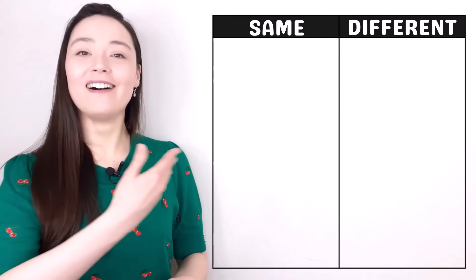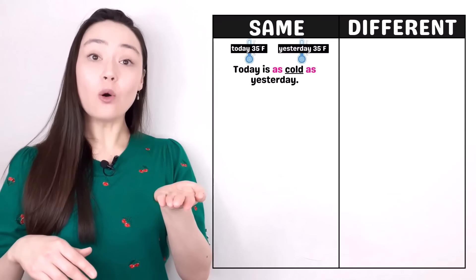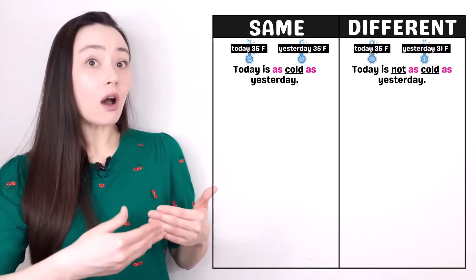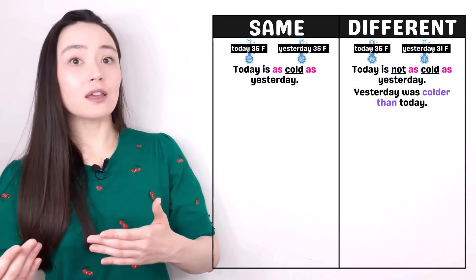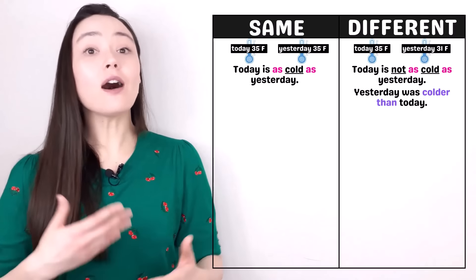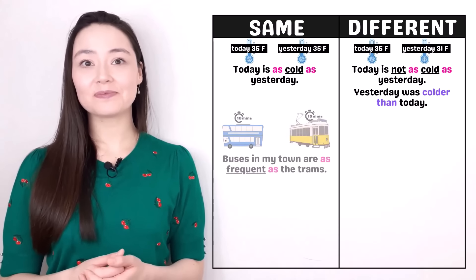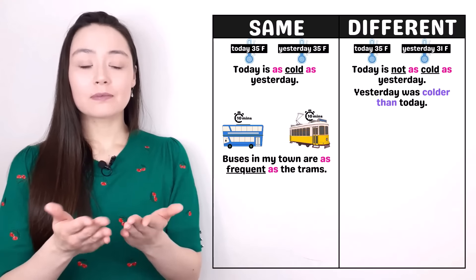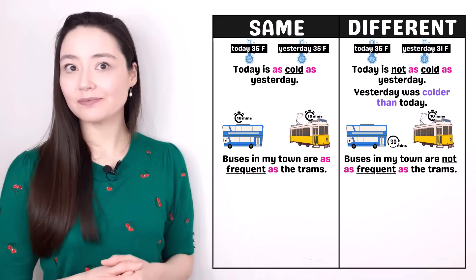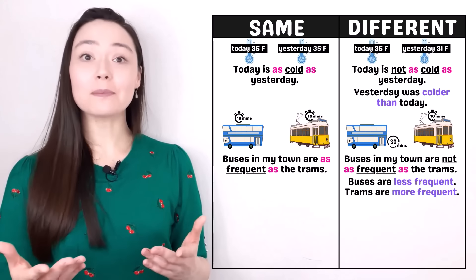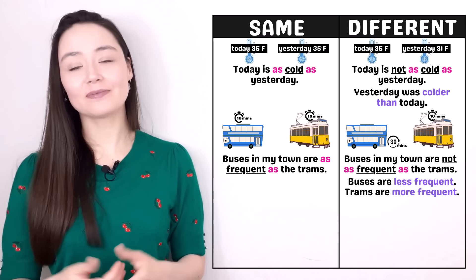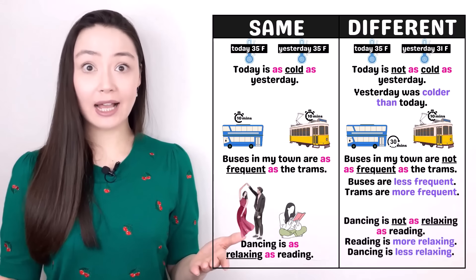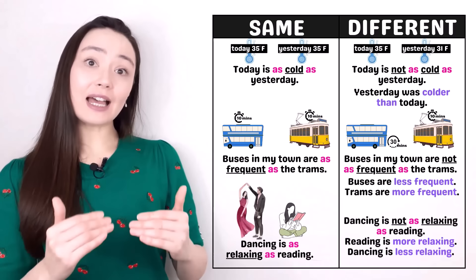Another chart — same or different. Today is as cold as yesterday. As adjective as — the same. I can make this negative: today is not as cold as yesterday; I can say yesterday was colder than today. There are a lot of options — it's all about variety. Buses in my town are as frequent as the trams — the same. Buses in my town are not as frequent as the trams — buses are less frequent, trams are more frequent. For me, dancing is as relaxing as reading. For me, dancing is not as relaxing as reading — reading is more relaxing, dancing is less relaxing.